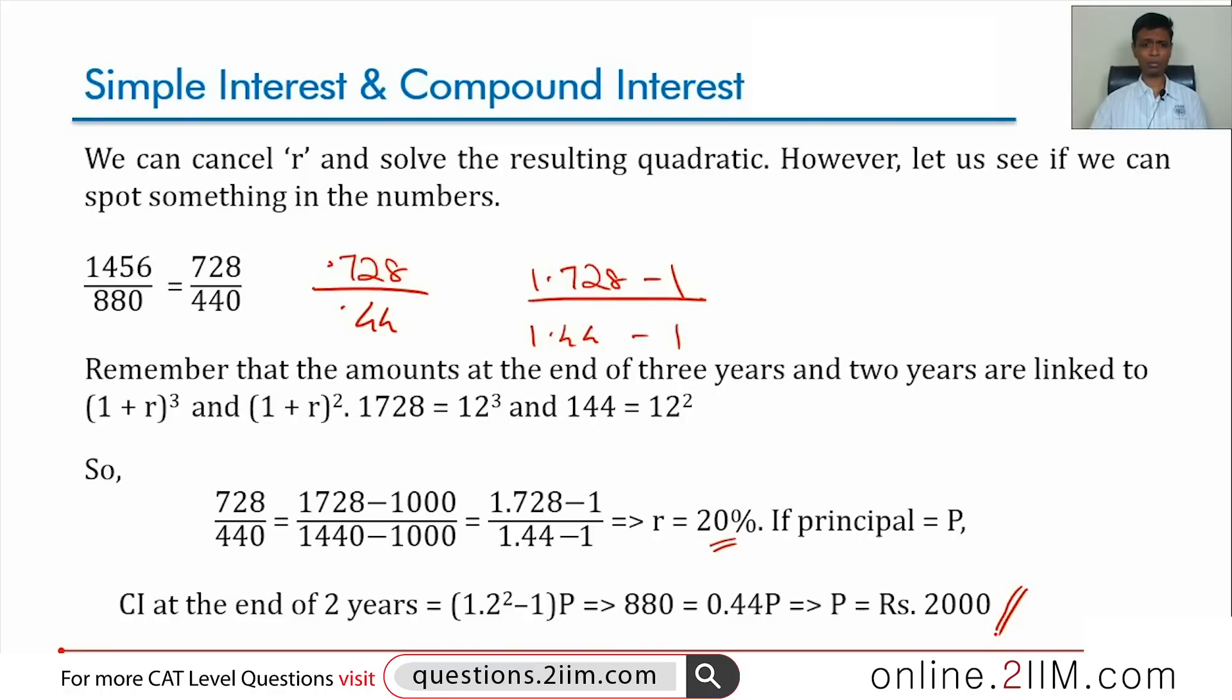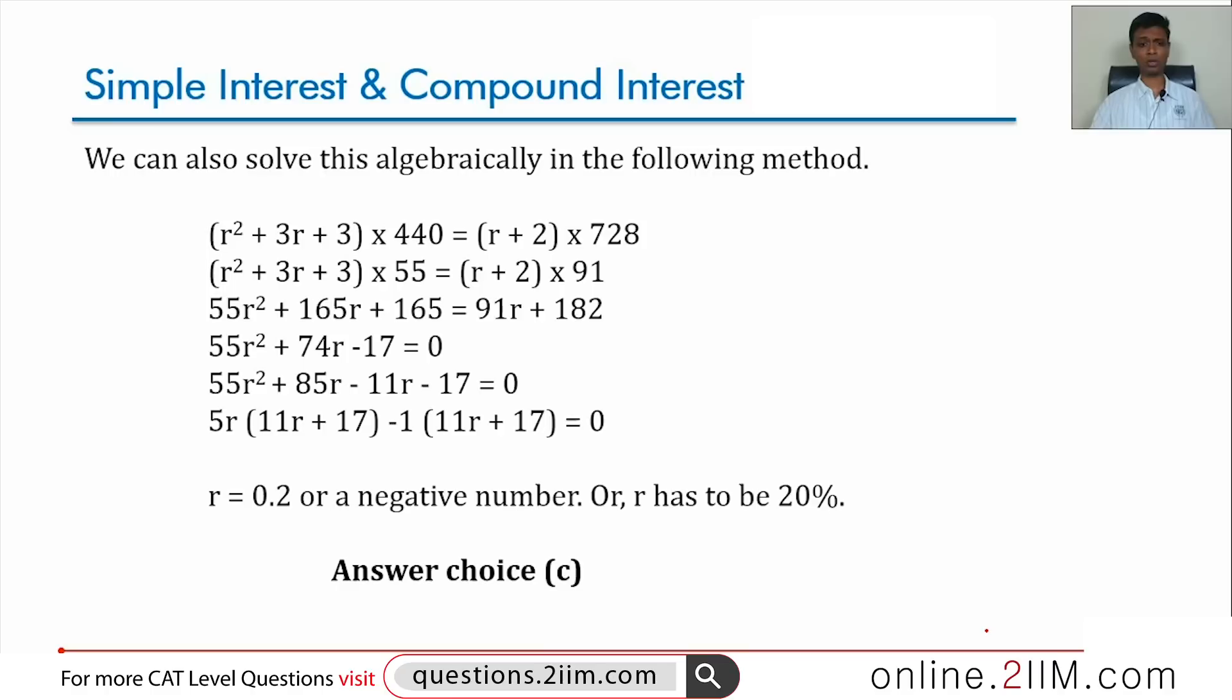Suppose we had not been able to pick that. How would we have solved? We have to solve it quadratic equation. R square plus 3R plus 3 into 440 is R plus 2 into 728. Cancel off whatever will get knocked off straight away which is 8. Knock off 8. Expand this quadratic. Solve this quadratic. This I am sure you can do. So, I am not going to go down elaborately solving this quadratic. It is not that easy but it is doable. We will get R as 0.2 when you solve the quadratic.